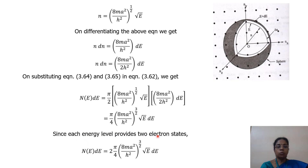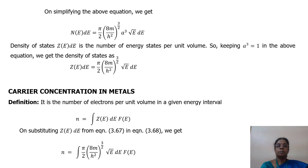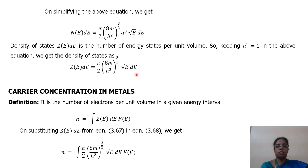Since each energy level provides two electron states due to spin, N(E)dE = 2 × (π/4) × (8mL²/h²)^(3/2) × E^(1/2) dE. On simplifying and taking L³ outside, we get N(E)dE = (π/2) × (8m/h²)^(3/2) × L³ × E^(1/2) dE. Dividing by the volume of the metal L³, we get the density of states: Z(E)dE = (π/2) × (8m/h²)^(3/2) × E^(1/2) dE. This is the density of states of a metal.